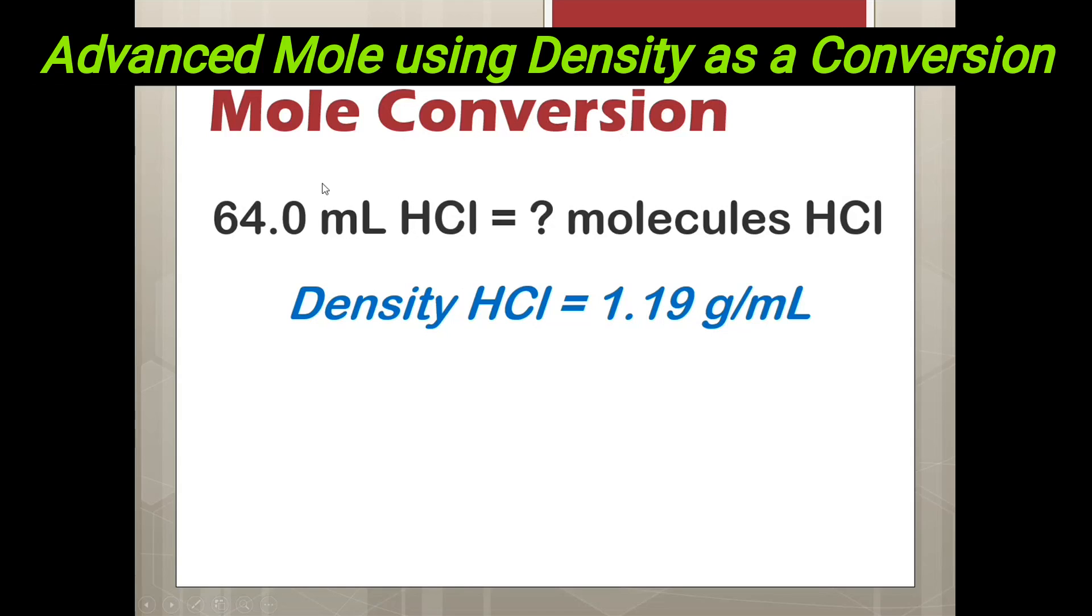This one's a bit trickier. I have milliliters of hydrochloric acid to molecules of hydrochloric acid. We're keeping the same substance, but I'm going from milliliters to molecules. Notice this is not at STP, and it gives us our density. You need to get to something that can get us to molecules. You are given the density right here. That is what we're going to start with.